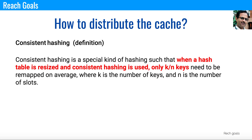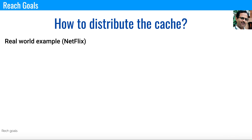That is how we apply consistent hashing for a distributed cache or when we want distributed load. The concept of consistent hashing is used across multiple companies — it is used in Netflix, Facebook, Akamai, and others. Let's talk about a real world example considering Netflix.